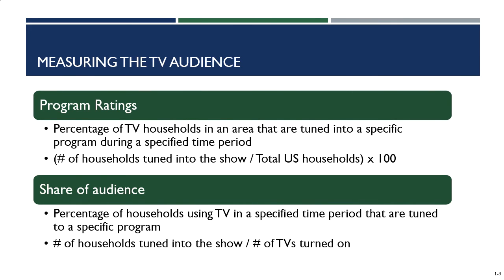The last measurement is the program rating — the best-known measurement and the number you see reported in the media. This is the percentage of households tuned into a specific program during a specific time period. Instead of dividing viewership by the number of TVs turned on, we divide by the total number of U.S. households with a television — coming back to that 118.4 million. Program ratings, even though they are technically a percentage, are always presented as a number by industry. So you'll see a program rating of 5.4, not 5.4%.